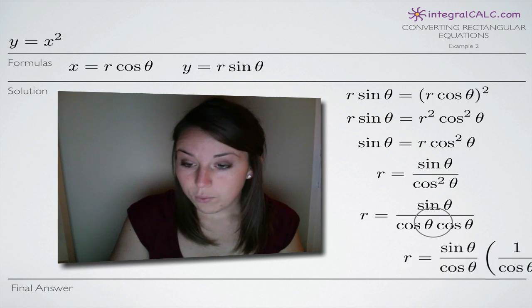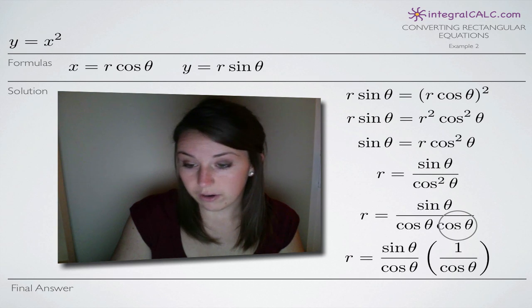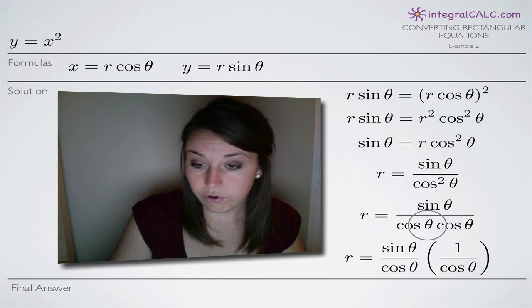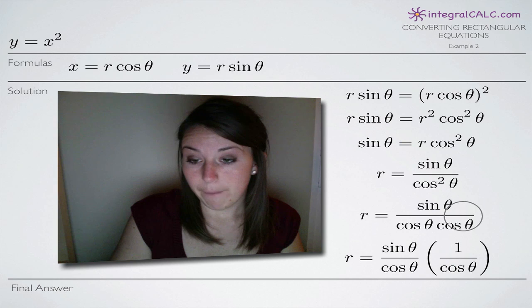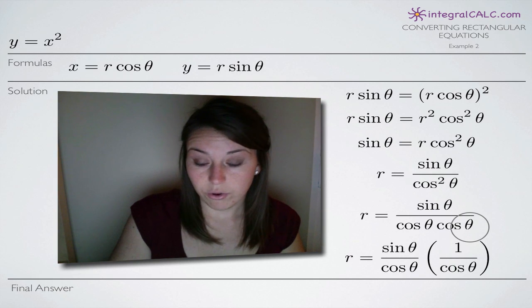And now we will separate these cosine theta's here in the denominator into two separate fractions. So we're left with sine of theta over the first cosine of theta here and then we multiply that by what's left in the numerator which is just one and the second cosine of theta.